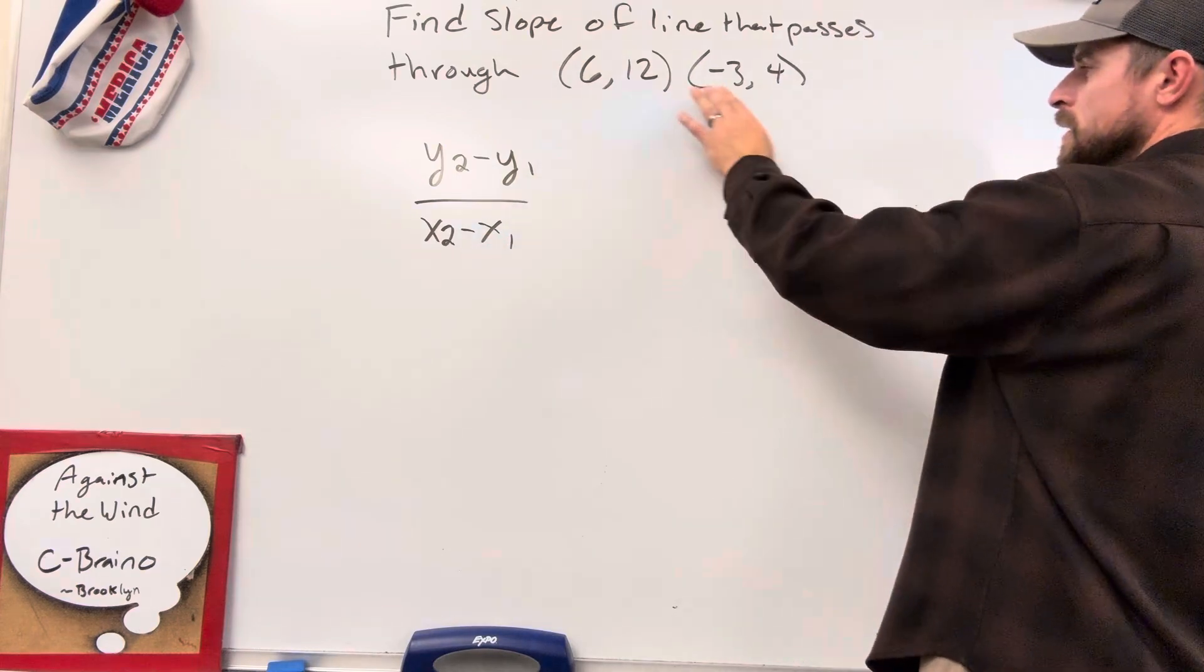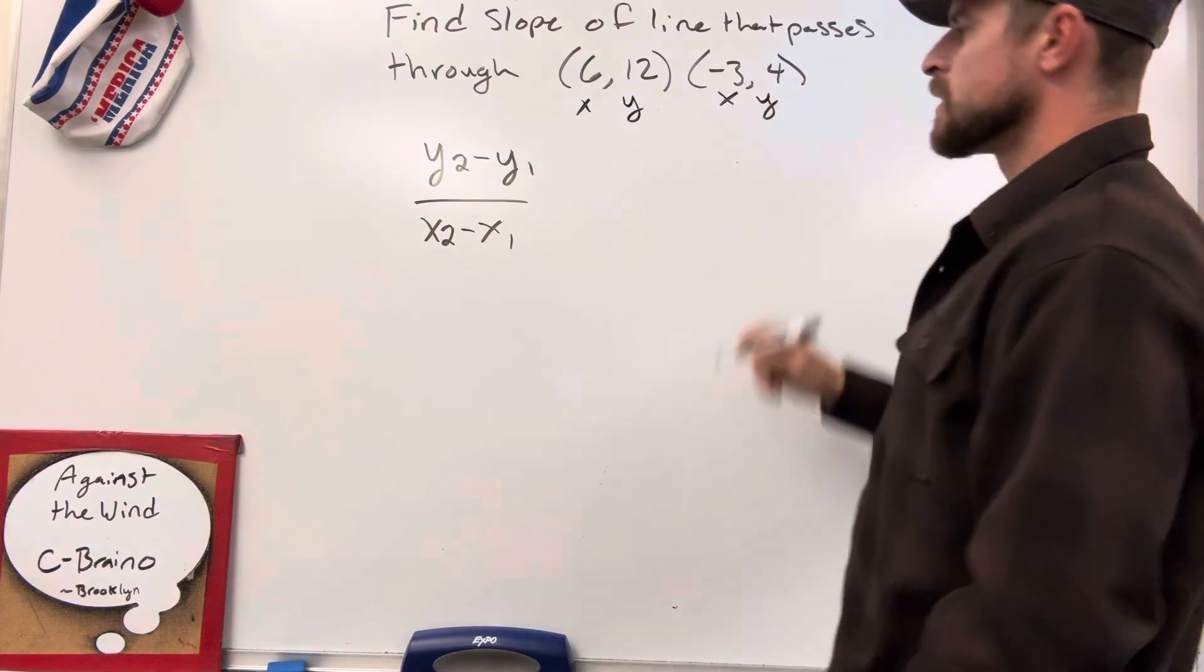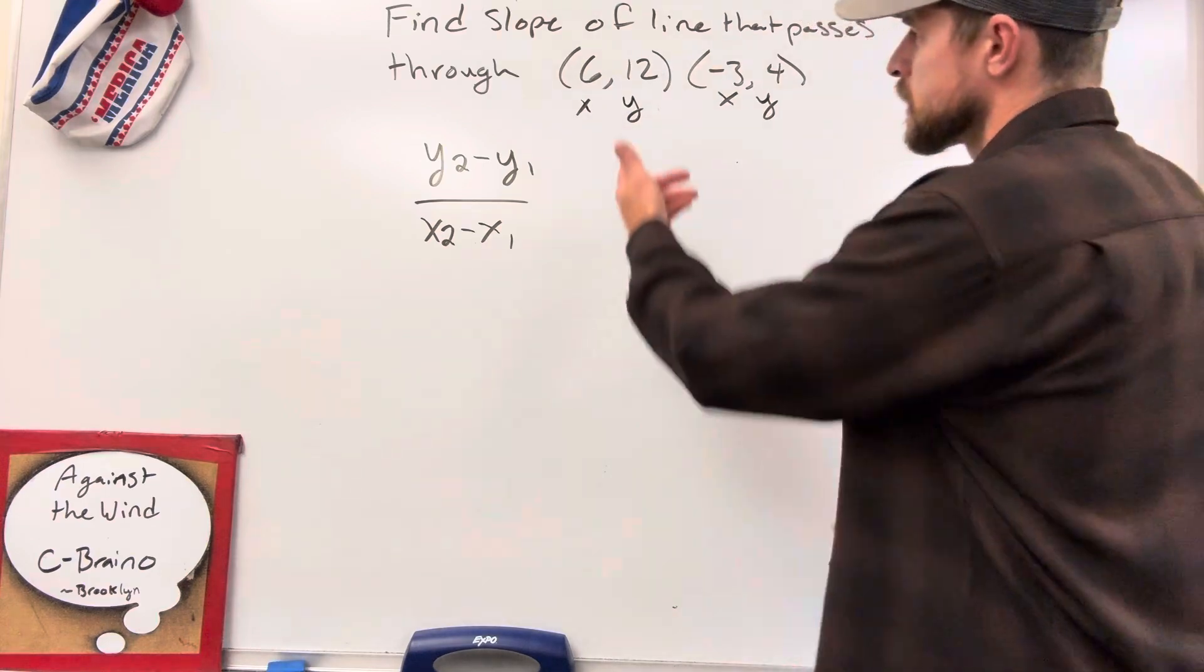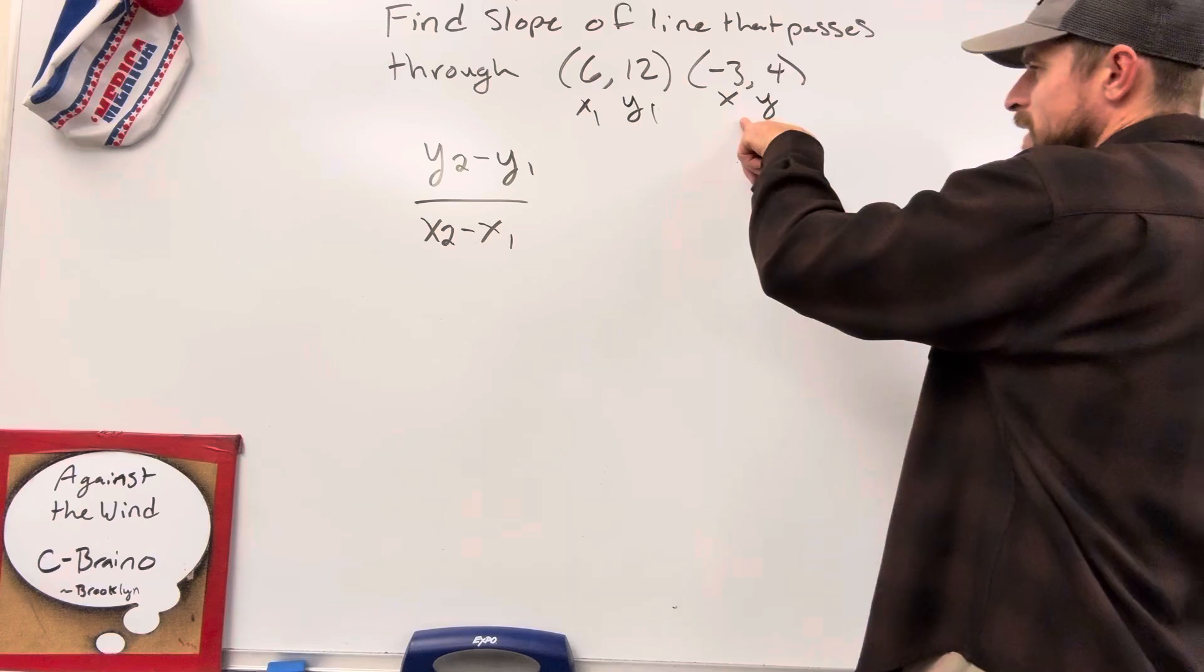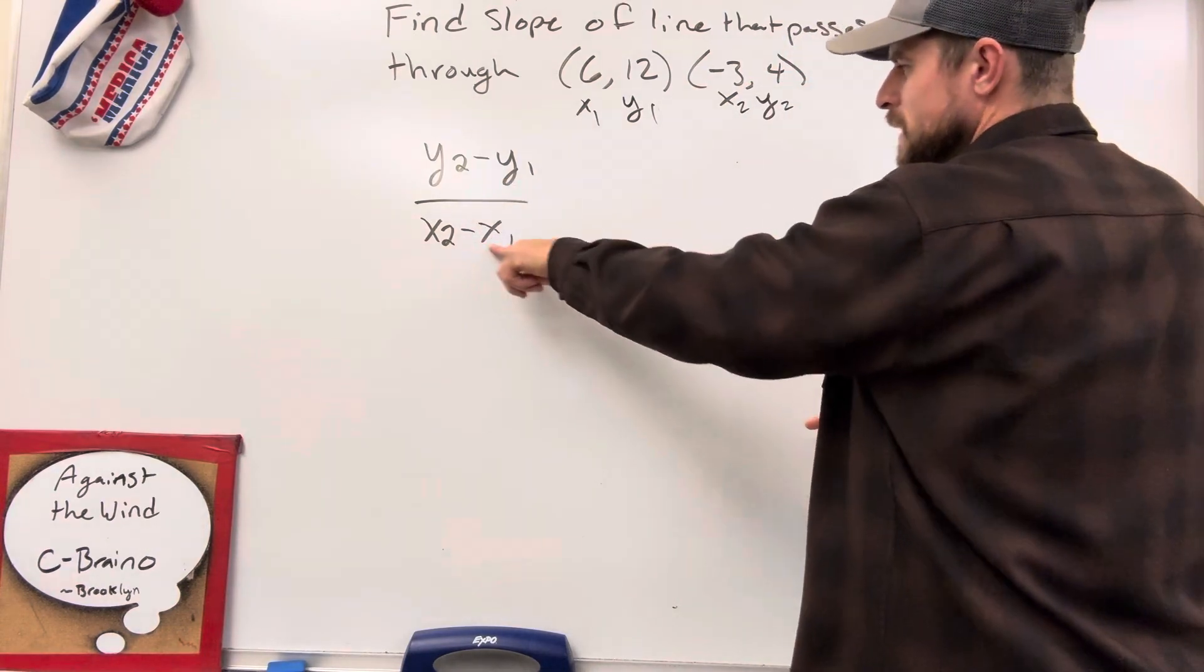So, you've got an xy coordinate here, an xy coordinate there. First thing I tell my students to do is label, xy, xy. So, put that down, then just ask yourself which one of those coordinates was given to you first. This one's written down first, so let's just give that ones. This one's written down second, so we're going to give it twos. And now we have everything labeled.